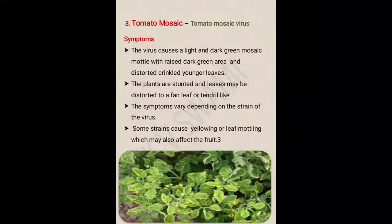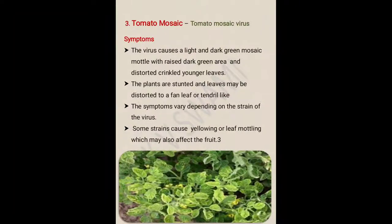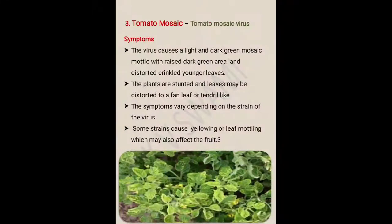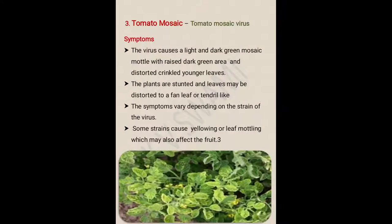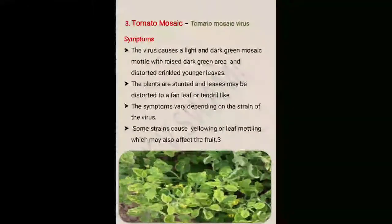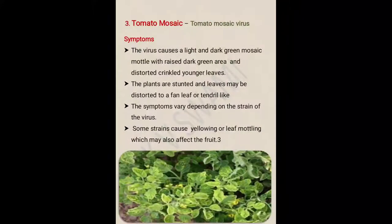Next is tomato mosaic, caused by Tomato Mosaic Virus, the causal organism for tomato mosaic disease. The virus causes a light and dark green mosaic pattern with raised dark green areas and distorted, crinkled younger leaves. Plants are stunted and leaves may be distorted to a fan-leaf or tendril-like shape. Distortion means loss of the original shape and size of the leaf.